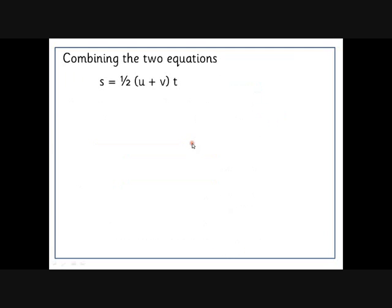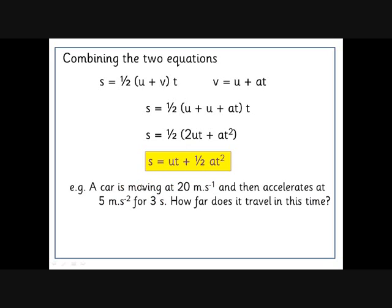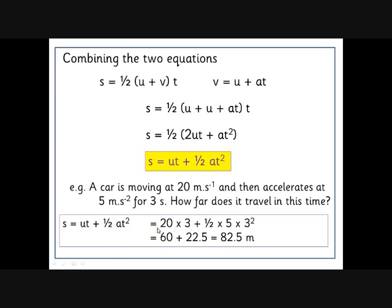Third equation, if we put these two together and do a little bit of slightly tricky algebra, you can see that S equals UT plus a half AT squared. So again, if we look at the same example again, another way of looking at it: 20 metres per second, accelerates for 3 seconds, how far does it travel? We've got UT plus a half AT squared, 60 plus a half times 5 times 3 squared is 22.5, that's 82.5 metres. We've already worked that out once.